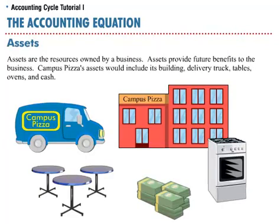Assets are the resources owned by a business. Assets provide future benefits to the business. Campus Pizza's assets would include its building, delivery truck, tables, ovens, and cash.